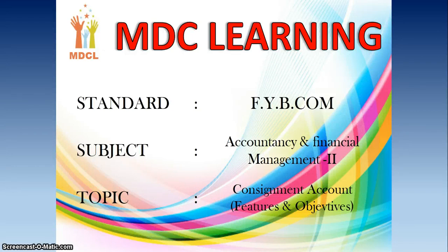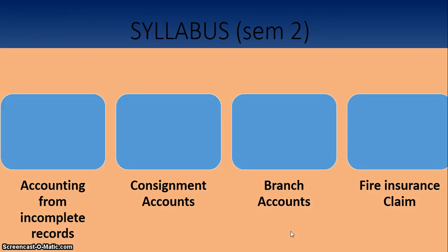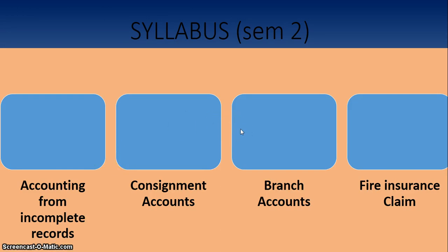Hello students, welcome to MDC Learning. FYBCOM Accountancy and Financial Management SEM 2, Chapter: Consignment Account — Features and Objectives. In your SEM 2 accounts syllabus there are 4 chapters: first is Accounting from Incomplete Records, second is Consignment Accounts, third is Branch Accounts, and fourth is Fire Insurance Claim. We will start with Consignment Accounts.